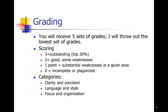You will be scoring your peers on a scale starting at three and going down to zero. Three is reserved for the most outstanding papers — the top 20%, about one in five papers. Two indicates a good job but with some weaknesses, more of an average performance. One point indicates substantial weaknesses where they really struggled with a particular category. You would give a zero if they handed in an incomplete paper or if you suspected plagiarism — plagiarized work will of course get a zero.